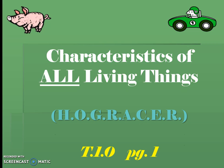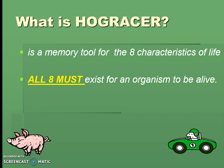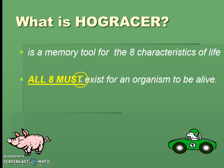Let's learn all about this thing called HOGRACE. HOGRACE is a memory tool — a mnemonic device — for the eight characteristics of life. Each letter in HOGRACE represents a different characteristic of all living things, and all eight of them must exist for an organism to be considered alive. This is something important that you should highlight.